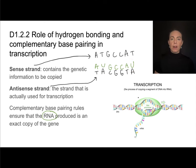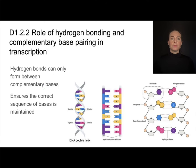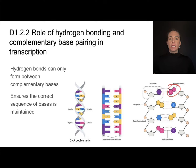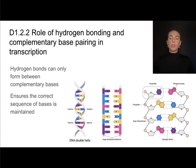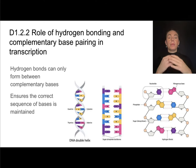Looking at this picture, the sense strand is not being used as the template; the antisense strand is being used as the template to make this strand of mRNA. It's really the hydrogen bonding between those complementary base pairs that ensures continuity of genetic information. Adenine can only pair with thymine because their molecular arrangement allows them to form two hydrogen bonds. Cytosine and guanine can form three hydrogen bonds. Guanine and adenine, however, are not compatible for hydrogen bonding.